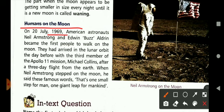American astronauts Neil Armstrong and Edwin Buzz Aldrin became the first people to walk on the moon, and they had arrived in lunar orbit the day before with the third member of the Apollo 11 mission, Michael Collins.